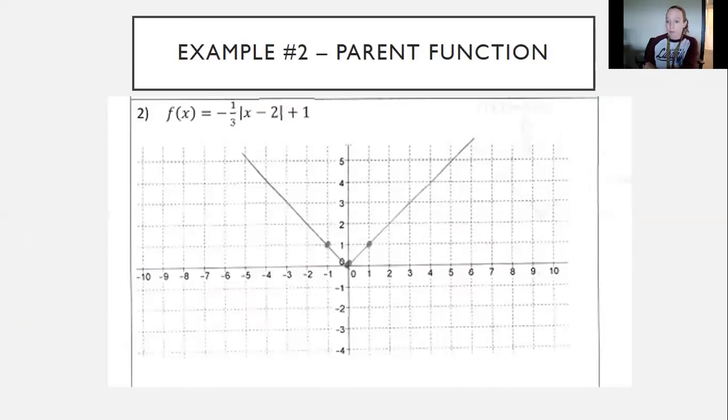So that's what your parent function should look like. You know it's absolute value so it's the v. So for me again I have my spotlight here and there is the vertex and I go up one to the right one and up one to the left one for those critical points.